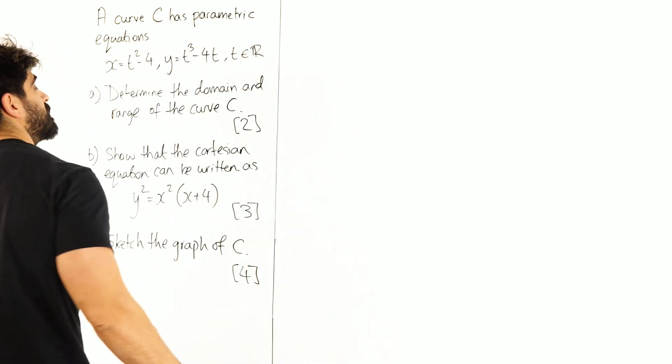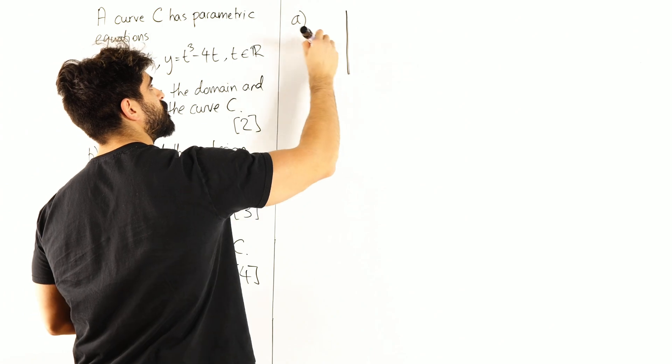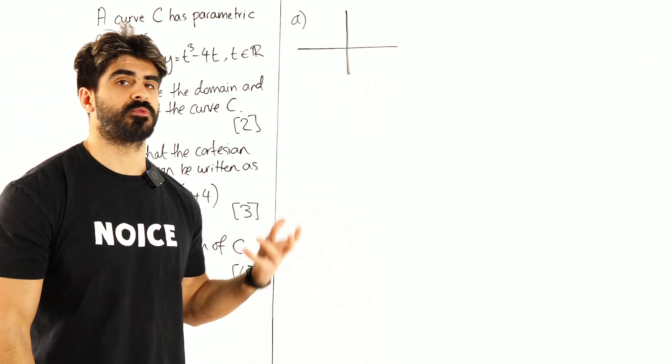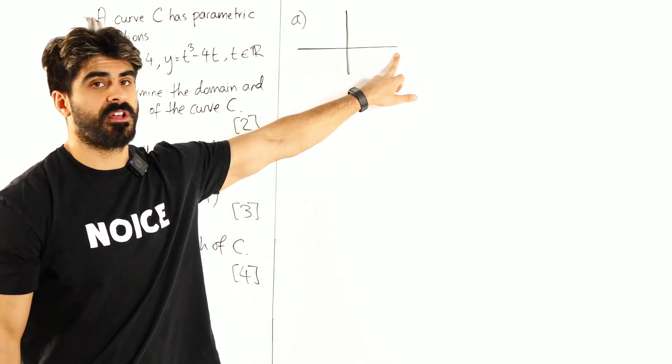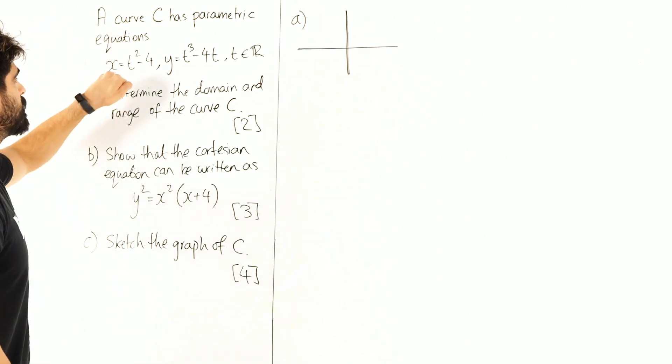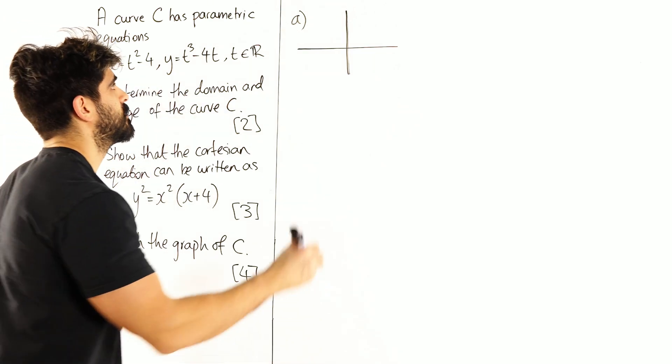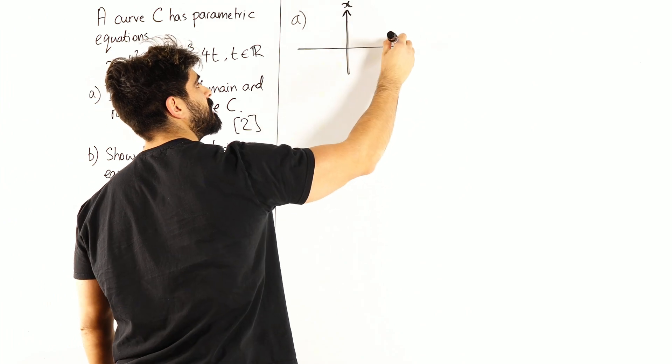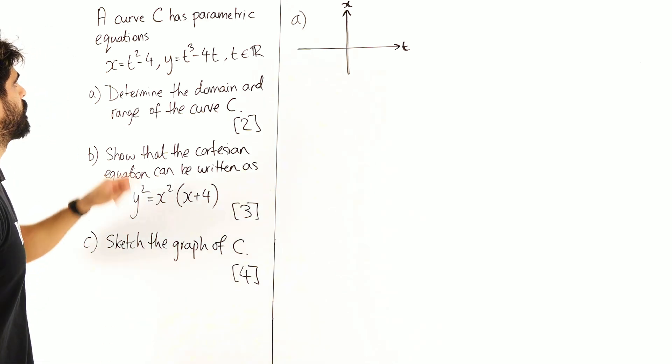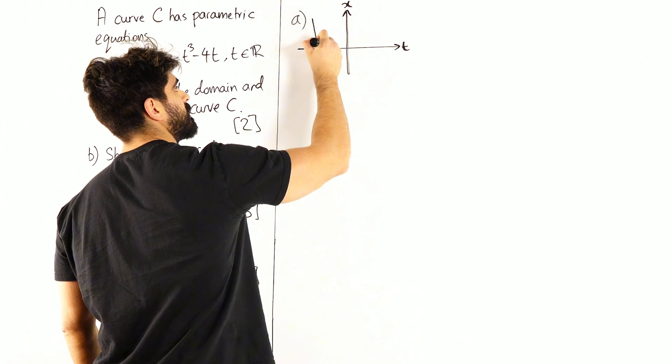So the best way to do this is to do a sketch. For the domain, this is where it becomes a little bit strange because we're used to plotting x on the x axis, right? But here it's rearranged for x. So you can think of x as being like the new y value. So x is over here and it is dependent on t. We're going to sketch this graph. x squared minus 4 looks like this.